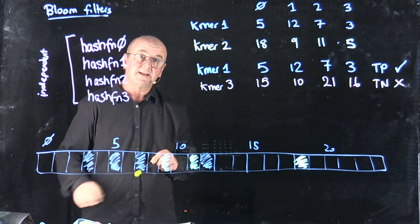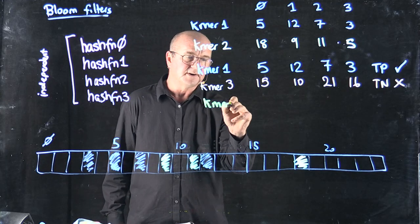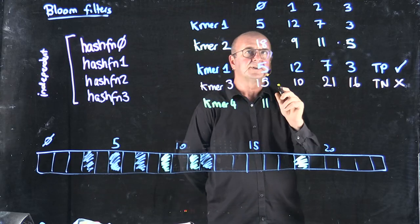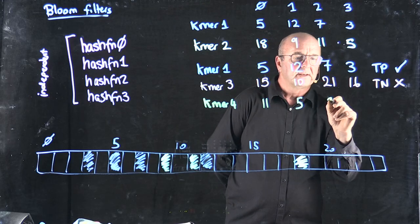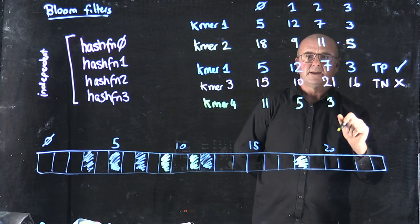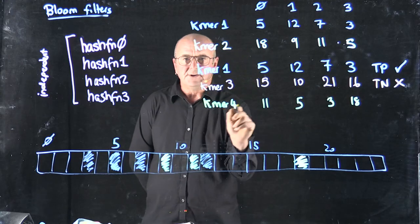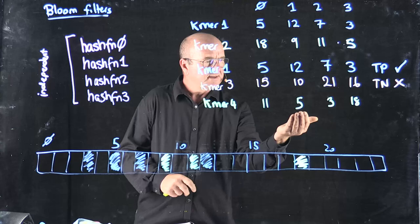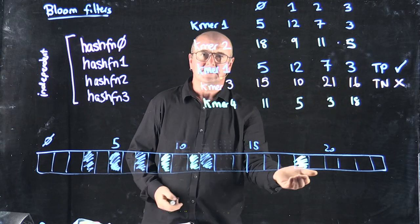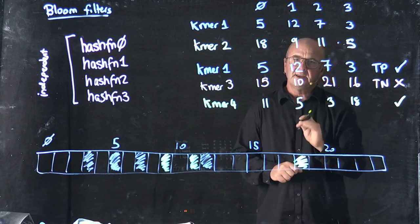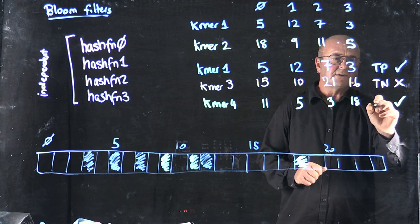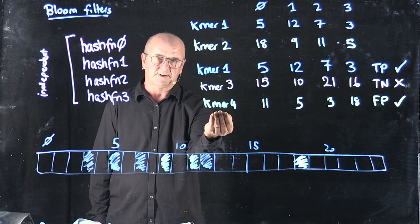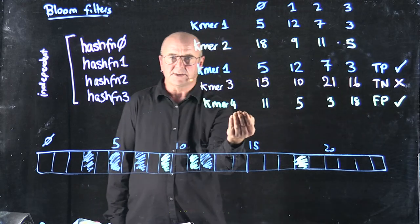Now suppose I come with a completely different KMA — KMA number 4. When I run my code for hash function 0, I get 11. For hash function 1, I get 5. For hash function 2, I get 3. And for hash function 3, I get 18. This is a new KMA that I haven't seen before, but when I test, I say: is 11 true? Yes. Is 5 true? Yes. Is 3 true? Yes. Is 18 true? Yes. So I would say I've seen this KMA before, even though in fact I haven't. So I'm getting a false positive. This is why the bloom filter is an approximate data structure — occasionally you can get the wrong answer.